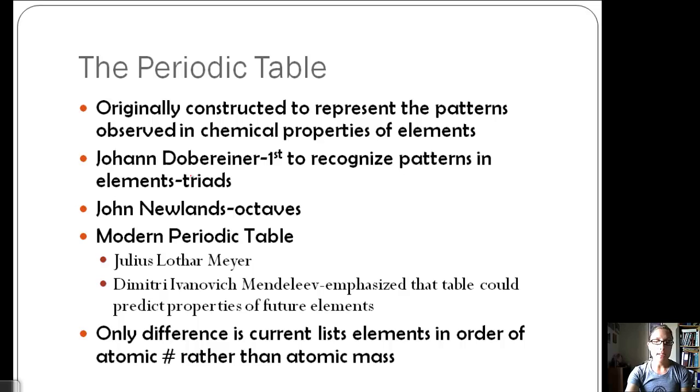The only difference between Mendeleev's periodic table and the one we use now is that we list elements in order of atomic number rather than atomic mass. But if you look, it does follow the same pattern except for a few differences.